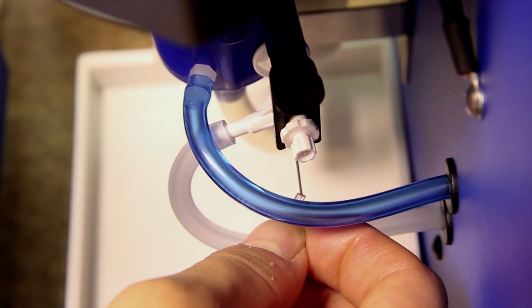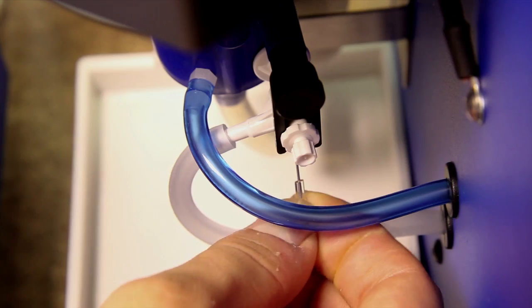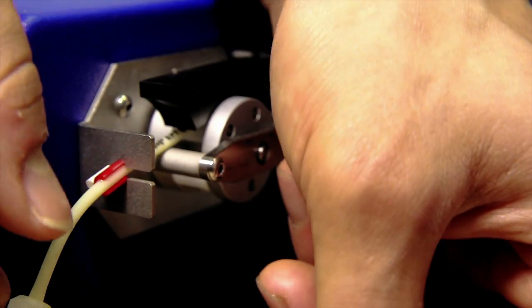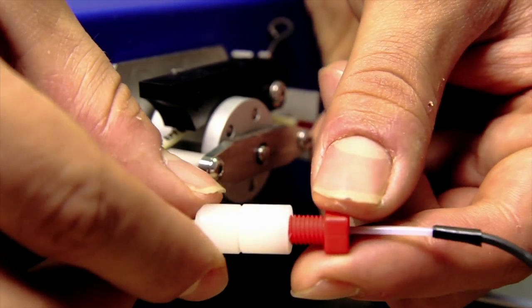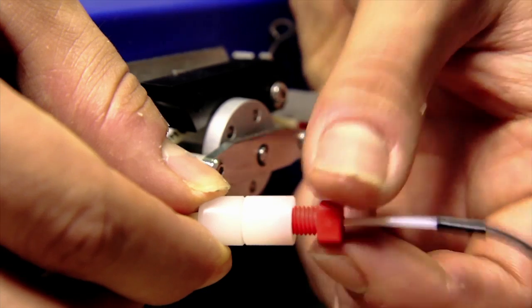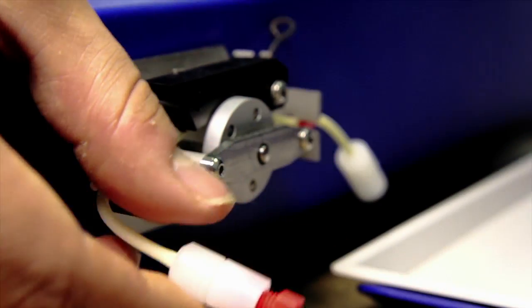Connect the discharge of the peristaltic pump to the nebulizer suction line. Connect the free end of the nebulizer suction line to the nebulizer input. Keep this tube length as short as possible.